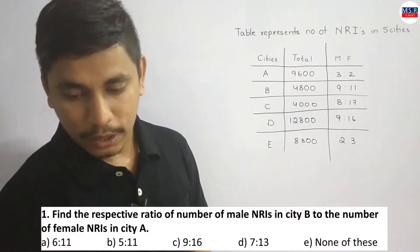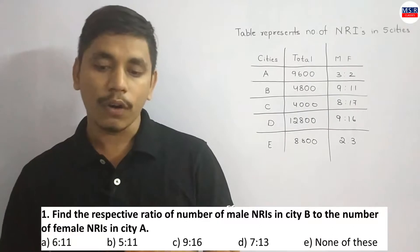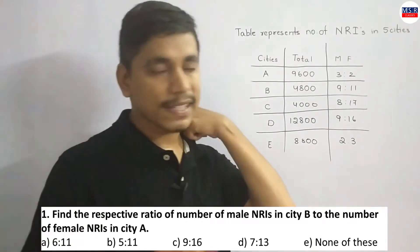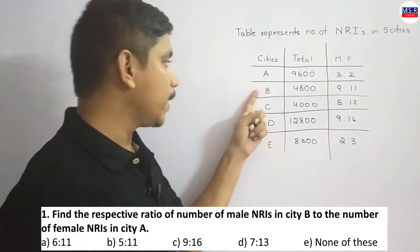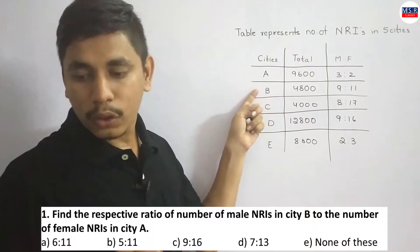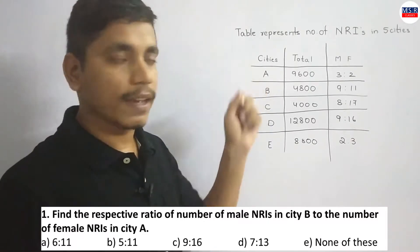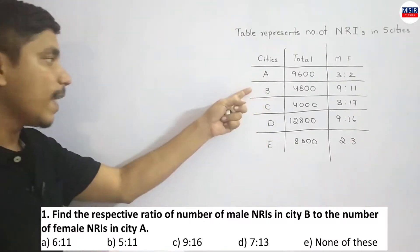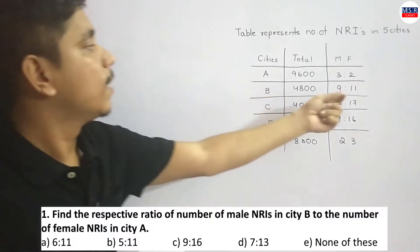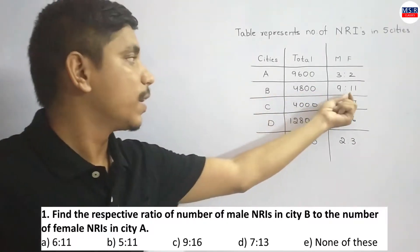First question: Find the respective ratio of the number of male NRIs in city B to the total number of female NRIs in city A. So, male NRIs in city B — we need the ratio. Total number of members, male members in city B.